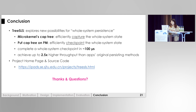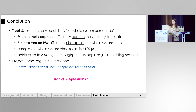In conclusion, TreeSLS explores new possibilities for whole system persistence with the help of microkernel and persistent memory. Our system can complete a whole system checkpoint in around 100 microseconds and achieve better throughput than application's original persistent methods. The homepage and source codes are available. Thank you very much, and I'm happy to take questions.